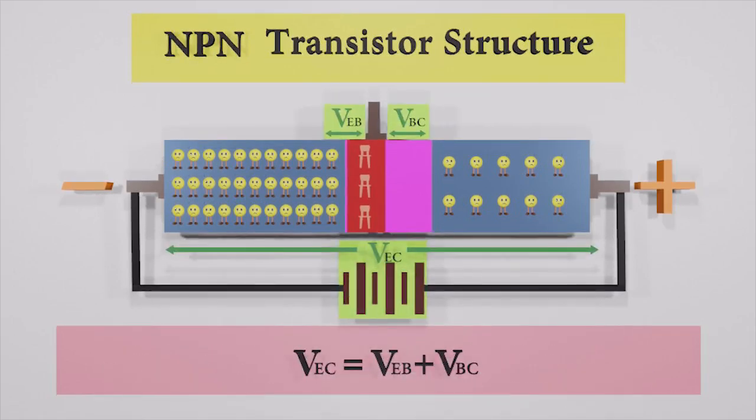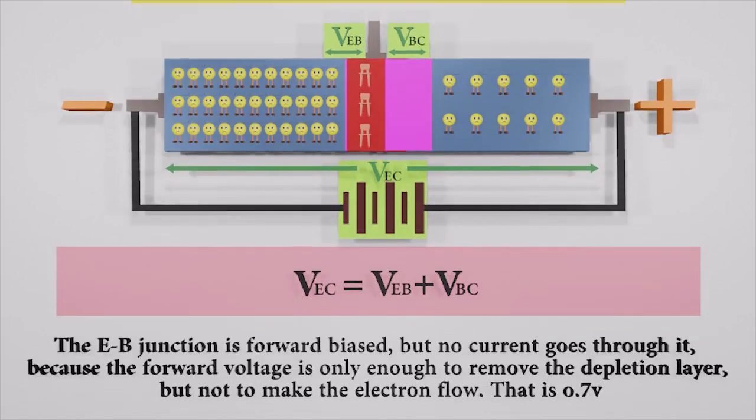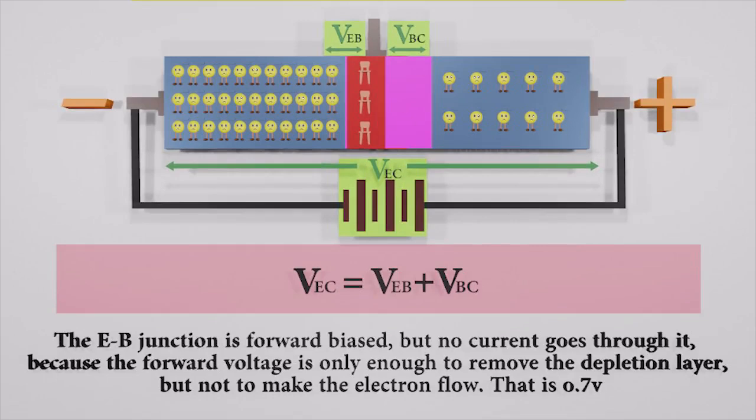We know the applied voltage is working across both junctions. The sum of the VEB and VBC is equal to the VCE. And we also know the BE junction is forward biased, but no current goes through it.